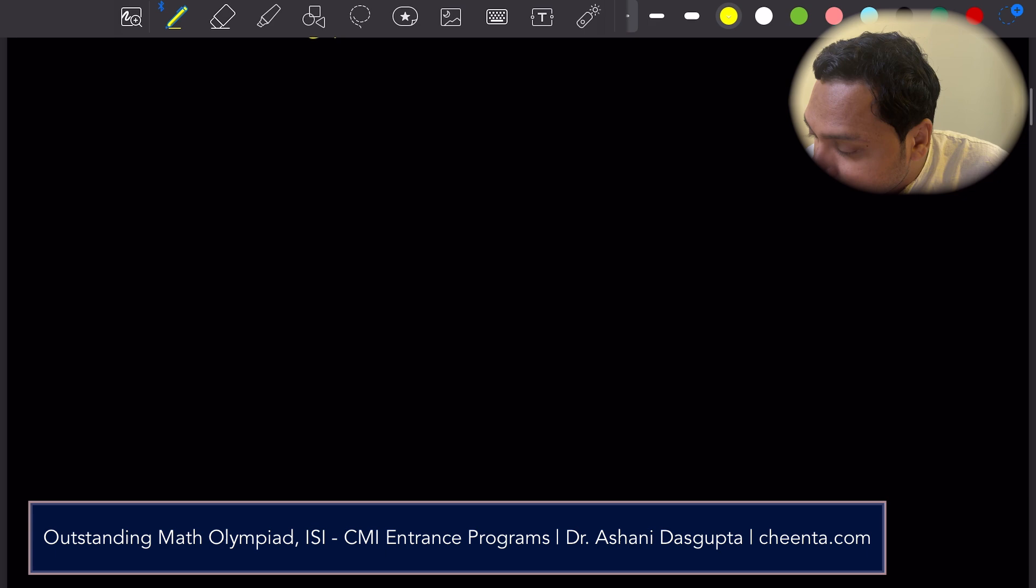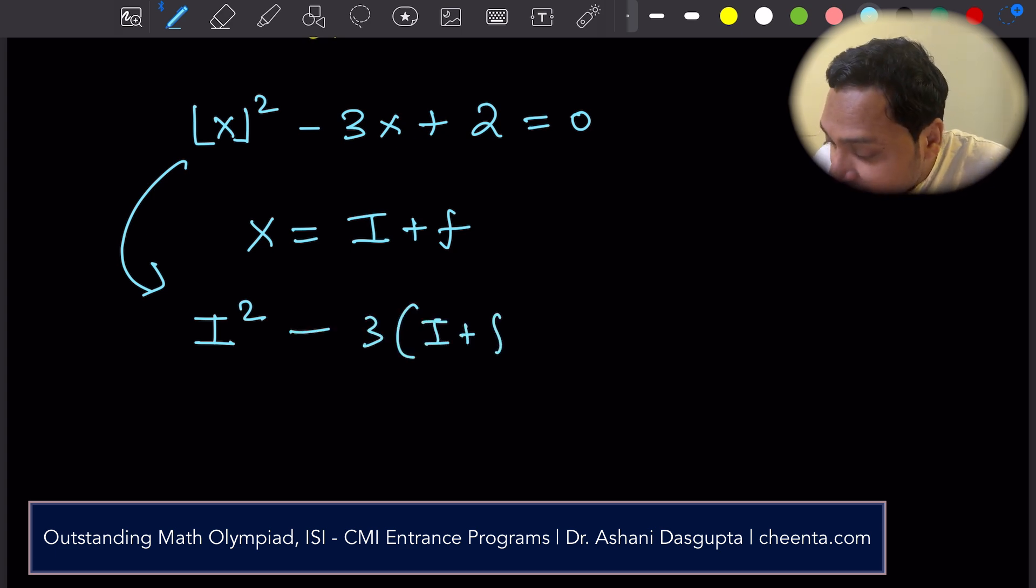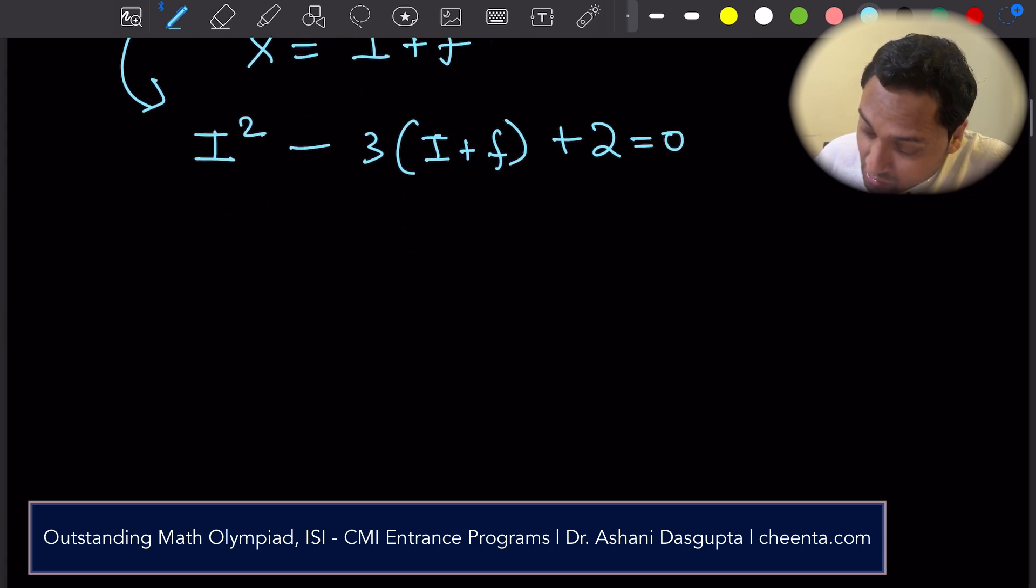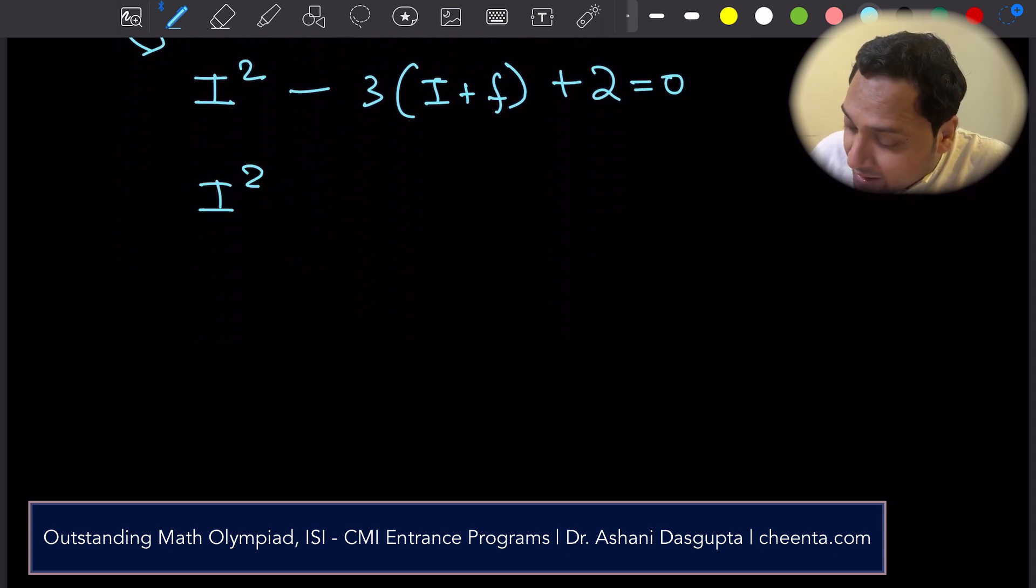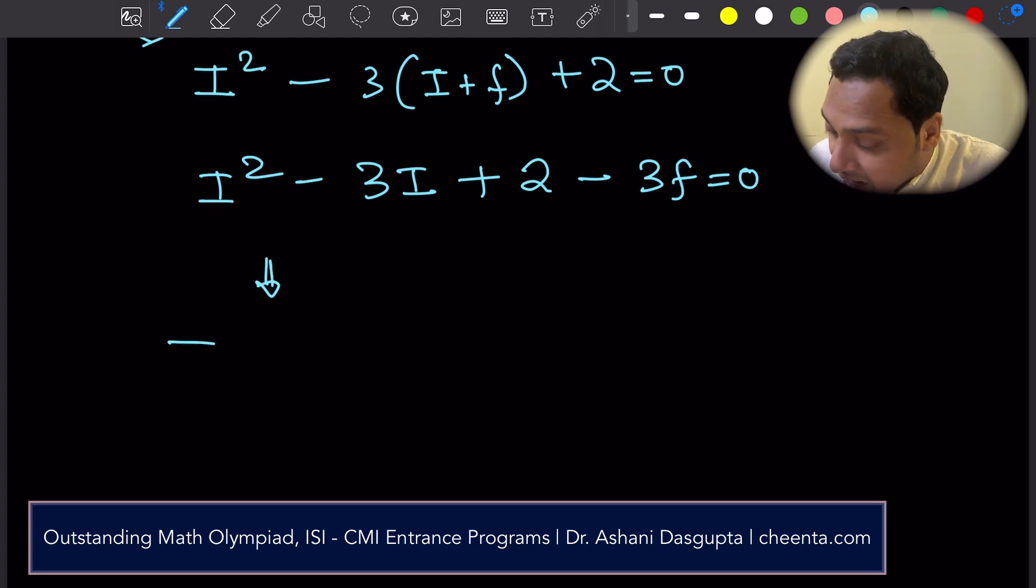Let's look at the equation one more time. It says integer part of x whole square minus 3x plus 2 equal to 0. Suppose x is equal to i plus f. Then this equation can be rewritten as i square minus 3 times i plus f plus 2 equal to 0. Or i square minus 3i plus 2 minus 3f equal to 0. In other words, i square minus 3i plus 2 is equal to 3 times f.